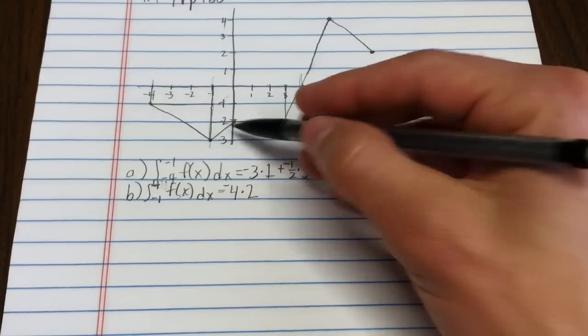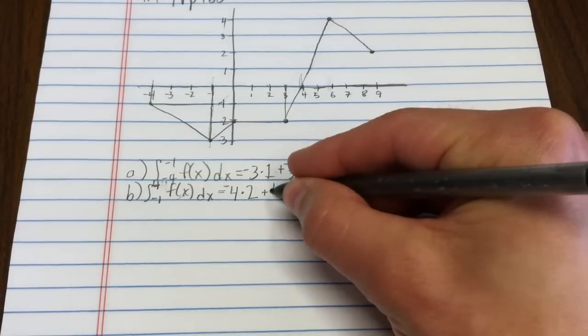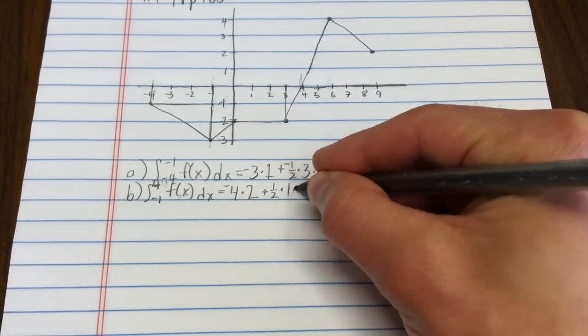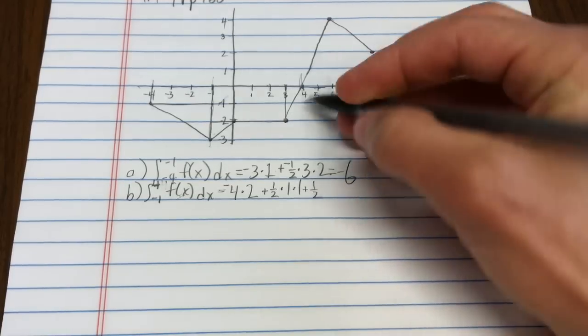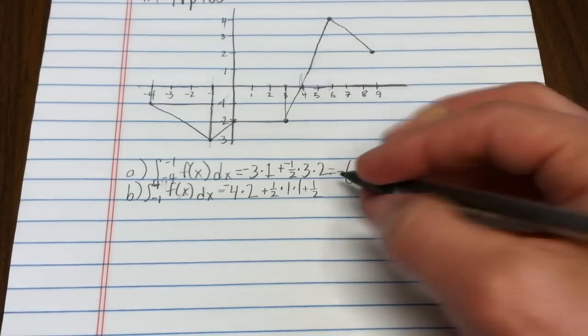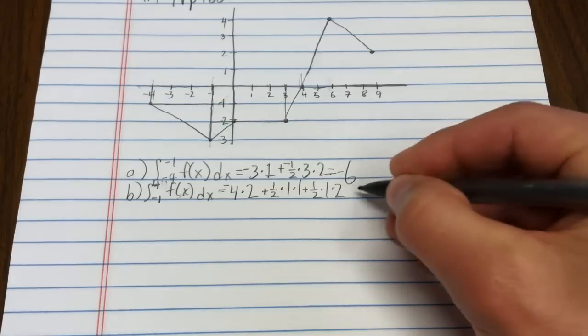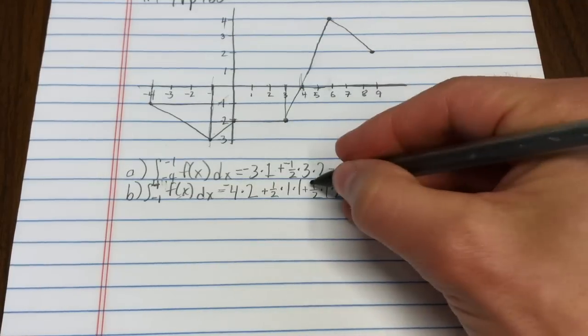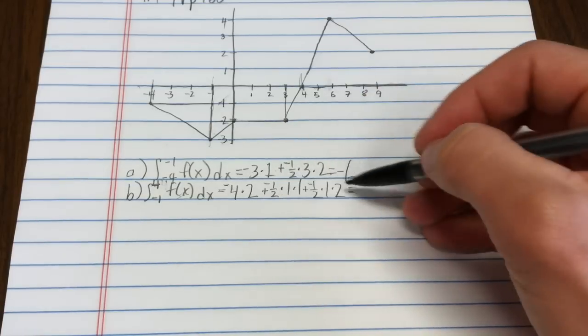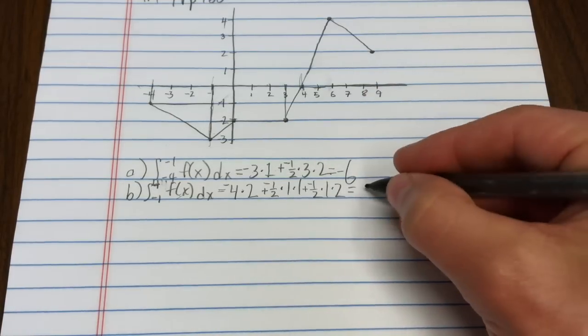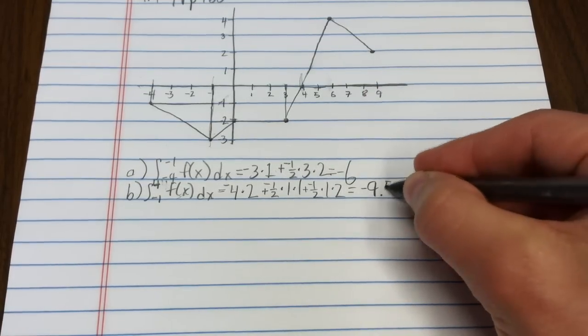Let's see. This box right here, that's 1 half base times height, so 1 times 1. This is 1 half base times height, so 1 times 2. So let's see, what do we have there? And these are negative, right? They're still below the axis. So negative 8, negative 1 half, negative 1, that's negative 9.5.